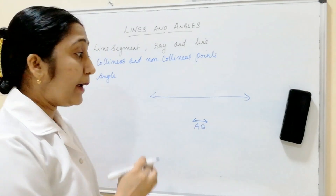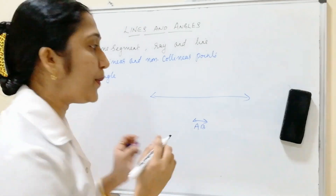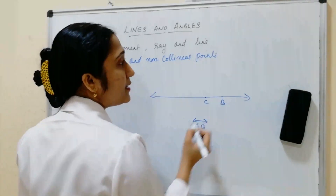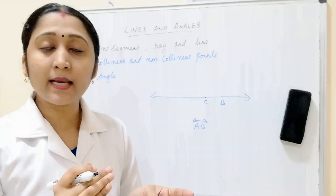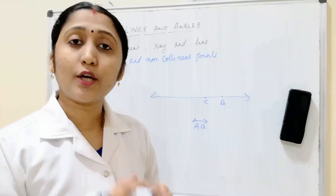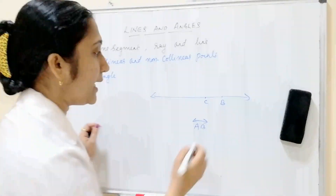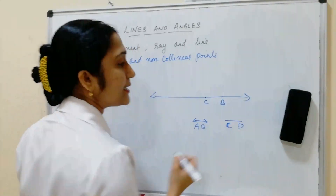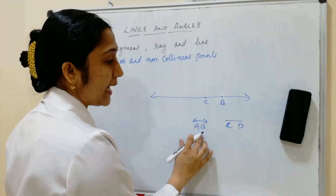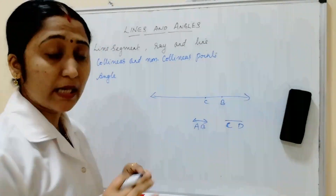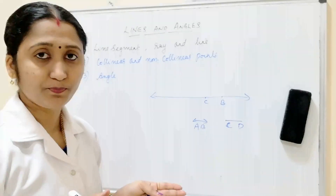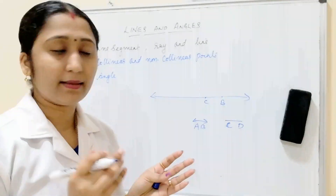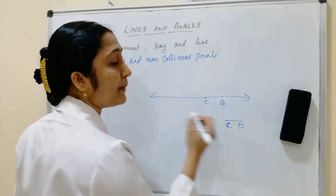If a part of a line has two end points, that part is called a line segment. A line segment is a part of a line with two end points, and it is denoted as line segment CD. So line AB goes both sides with no end point, while line segment CD has two end points.